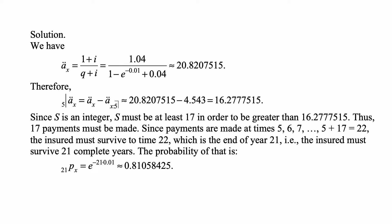Since S is an integer, S must be at least 17 in order to be greater than 16.2777515. Thus, 17 payments must be made. Since payments are made at times 5, 6, 7, and so on, up to 5 plus 17, which is 22, the insured must survive to time 22, which is the end of year 21, so the insured must survive 21 complete years.